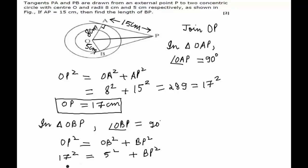you can easily find it out. BP square would be equal to 17 square minus 5 square. This is equal to 289 minus 25. This comes out to be equal to 264.